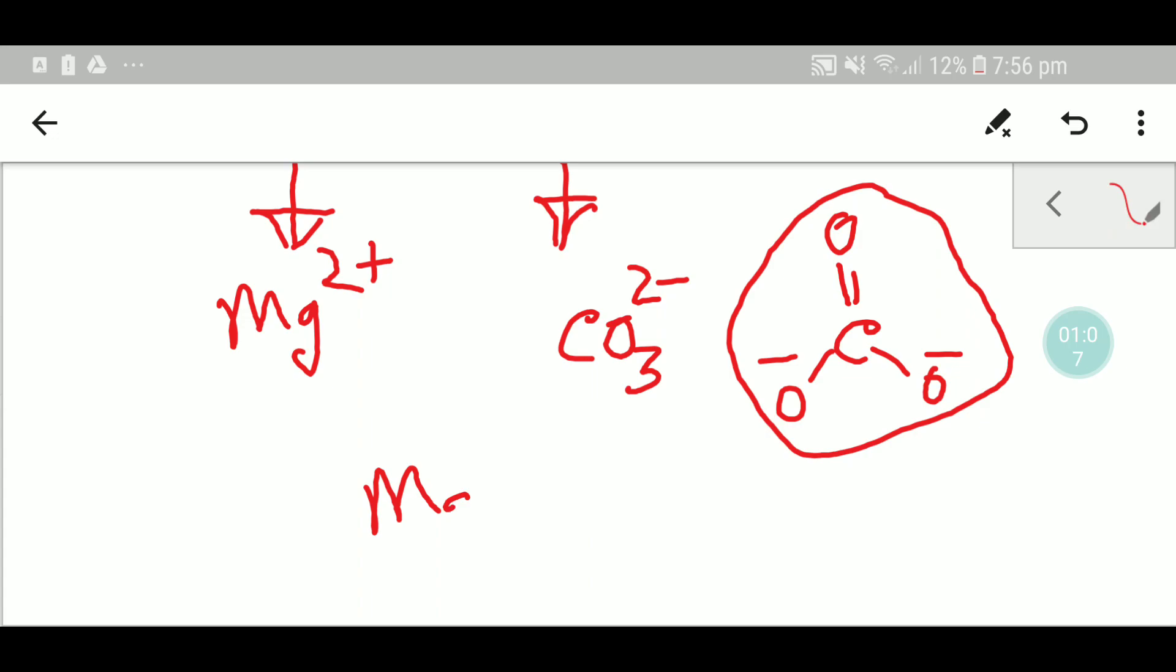You have to write these two types of ions side by side. I am writing here. You know that the two plus of magnesium will cancel out the two minus of carbonate.